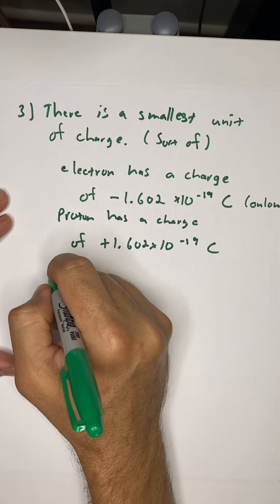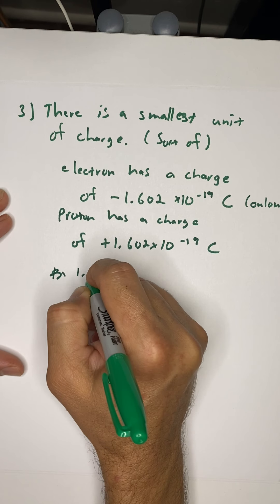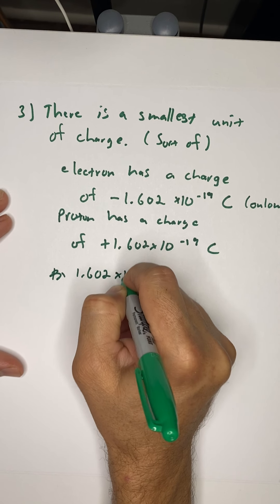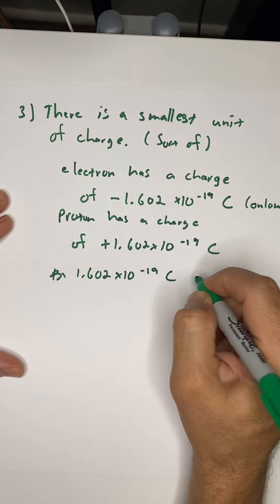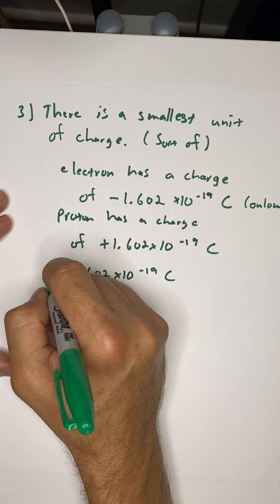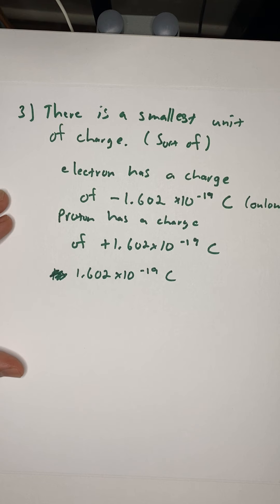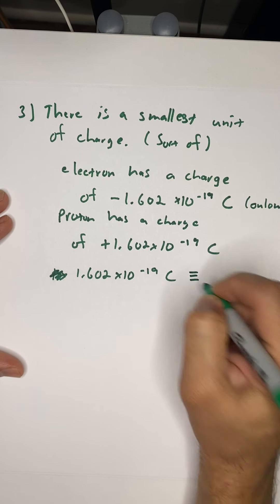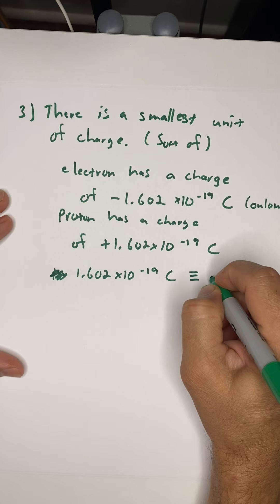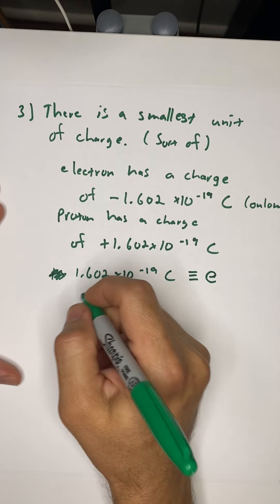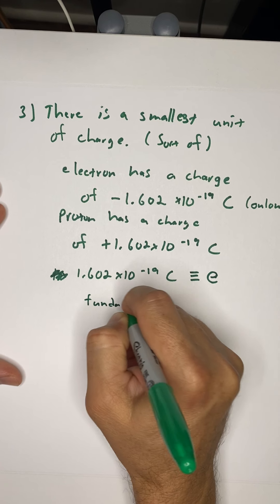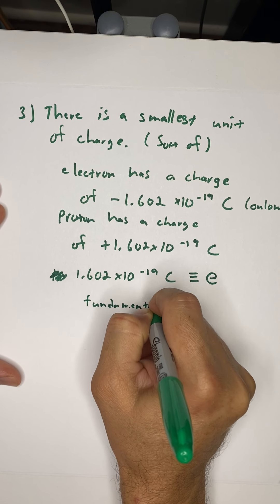This number, this 1.602 times 10 to the negative 19th Coulombs, is obnoxious to write down all the time. Just like in Physics 1, it was kind of obnoxious to write down 9.81 meters per second squared all the time. So what do we do? Being good, lazy physicists, we wrap that number up in the letter G. Here, we're going to wrap this number, three lines means definition, in E for the fundamental charge.